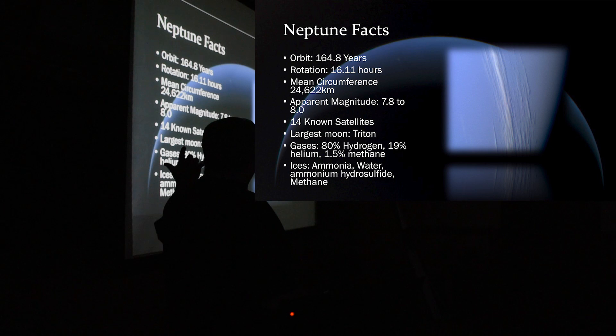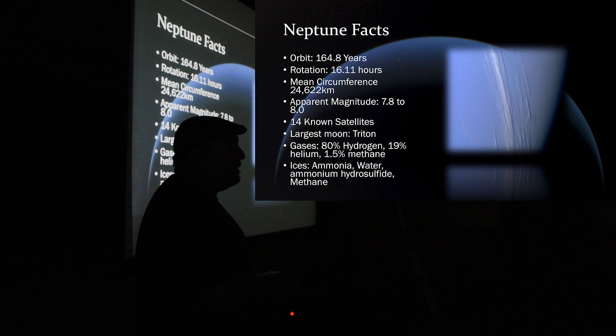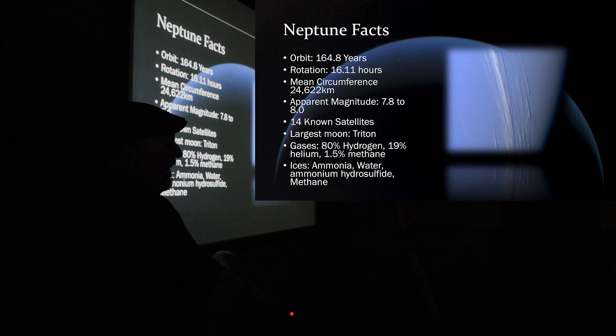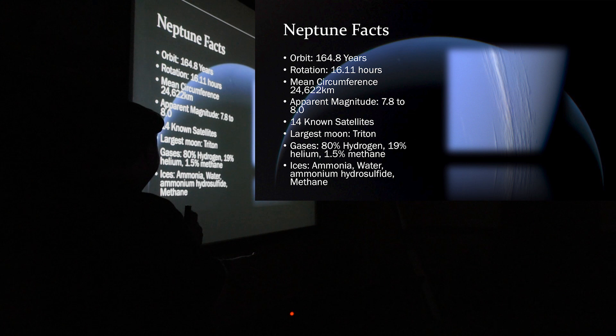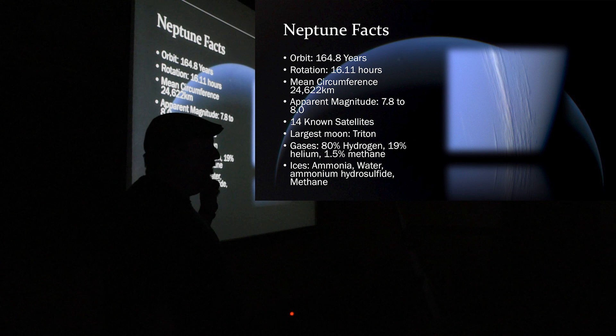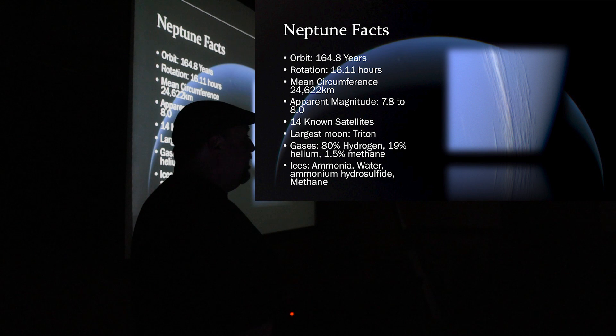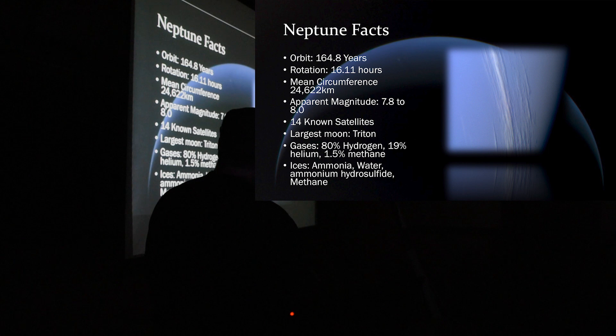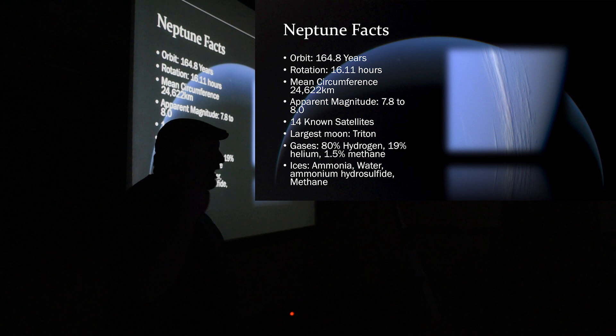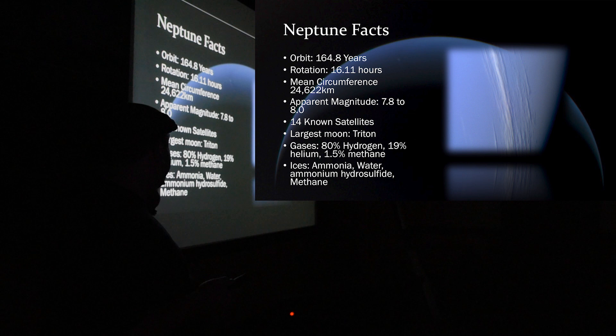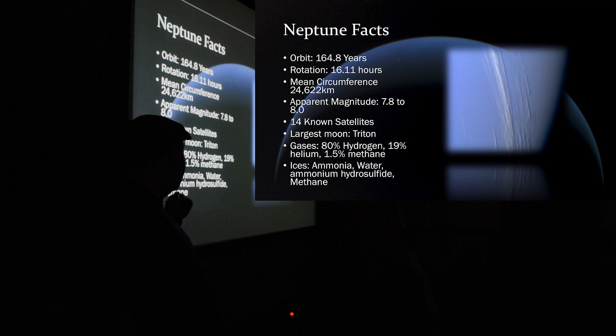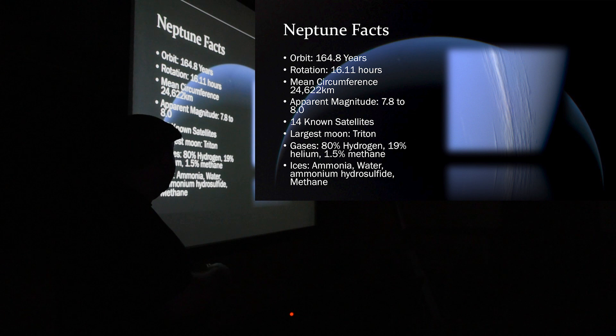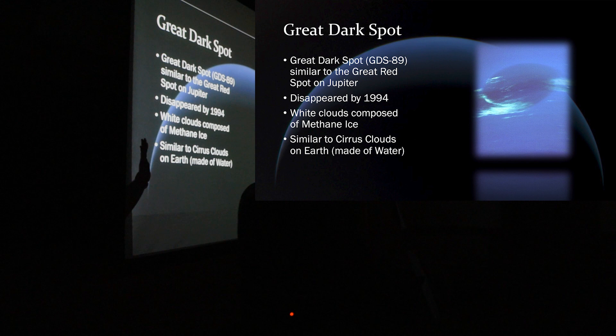One year on Neptune is 164.8 Earth years. It spins at 16.11 hours, one rotation. It is smaller than Uranus, but it's more massive than Uranus. It's magnitude 7.8 to 8.0, so you cannot see it with your naked eye. Uranus you can see with the naked eye, but it's very difficult. I've seen it before, but it's not very bright. You've just got to know where to look for it. So, Neptune you cannot see unless you're using a telescope. I have seen Neptune several times. It's fun to look at. It looks like a little pale blue-ish green dot. It has 14 known satellites, and its largest satellite is the moon Triton. It's mostly made up of hydrogen, helium, and methane, and the ices involved are ammonia water. So, it's mostly ammonia water and a little bit of ammonium hydrosulfide.